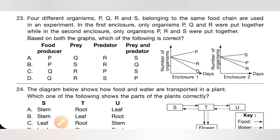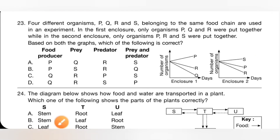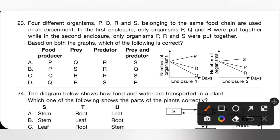Question 23: Four different organisms P, Q, R and S belonging to the same food chain were used in an experiment. In the first enclosure only P, Q and R were put together; in the second, only P, R and S. A predator is an animal that hunts, kills and eats other animals; prey is an organism a predator kills for food. Based on the graphs, Q is the food producer and R is prey for P.